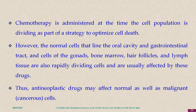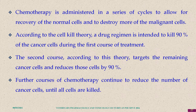Antineoplastic drugs affect normal as well as malignant cells. We cannot make these drugs very specific because cancer cells and normal proliferating cells are both cells of the same body. Chemotherapy is administered in a series of cycles to allow for recovery of normal cells and to destroy more and more malignant cells.